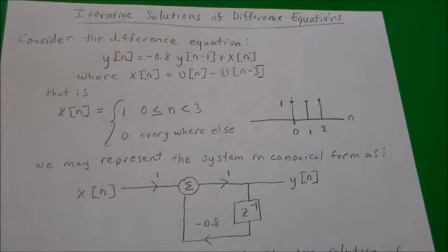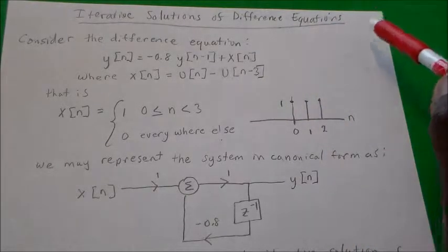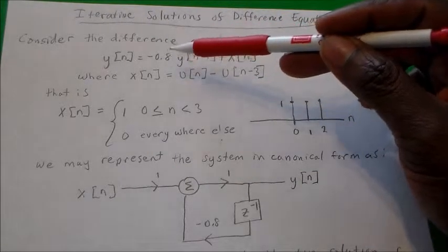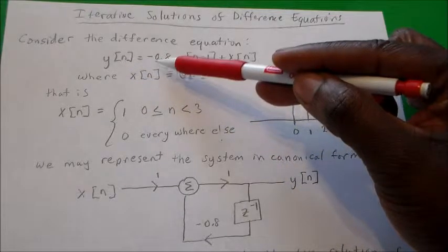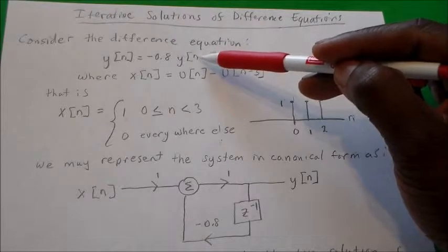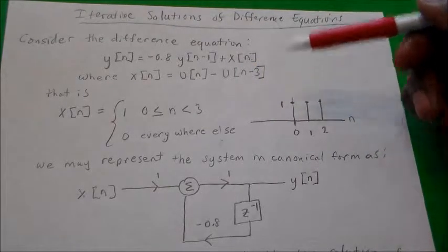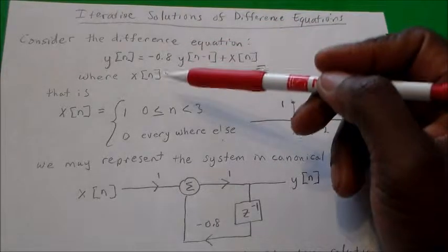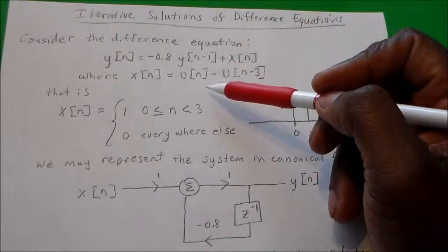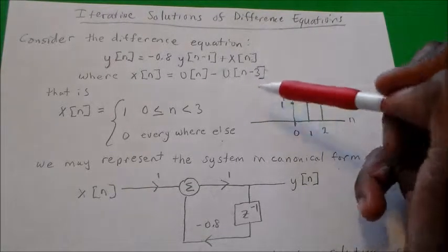So in the previous video, if you recall, we were looking at iterative solutions for a difference equation. We picked a particular example: the difference equation y of n is equal to negative 0.8 times y of n minus 1, plus x of n. And the input to that system, x of n, where n is the discrete time, is equal to the unit step minus the unit step delayed by three samples.